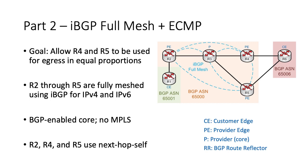Hi everyone, Nick Russo here, and welcome back to the BGP multi-homing series. Our first use case combines a full mesh of IBGP peers within AS65000 with the desire for Equal Cost Multipath, or ECMP, towards R6.